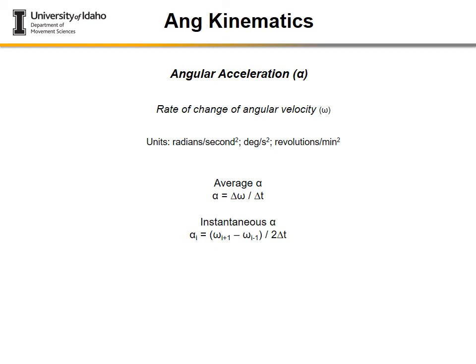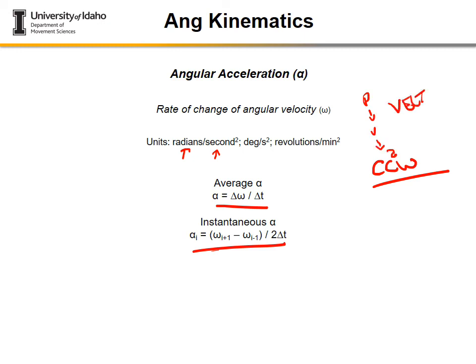Angular acceleration — denoted alpha — is the rate of change of angular velocity, with units of angle per time squared, such as degrees per second squared. The same average versus instantaneous distinction applies. The only difference between angular velocity and angular acceleration are the units of measurement. The counterclockwise positive convention carries through position, velocity, and acceleration, since all are vector quantities.